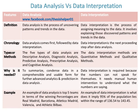An example of data analysis is: the top five teams in terms of winning percentages are Real Madrid, Barcelona, Atletico Madrid, Valencia, and Athletic Bilbao. Whereas an example of data interpretation is: what does it imply that 95% of the population lies within the range of 136.54 to 143.45?